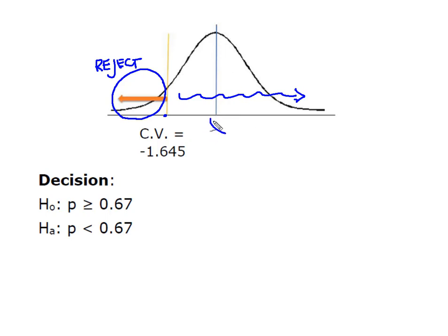So I calculated my test statistic to be just 0.38, which is well out of the rejection region. So our decision will be do not reject H₀.